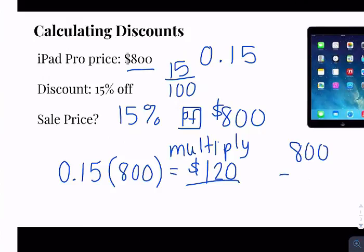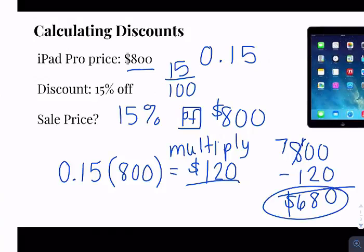So we get to take 800 and subtract 120. So my price, my sale price, is $680 once I take my 15% off.